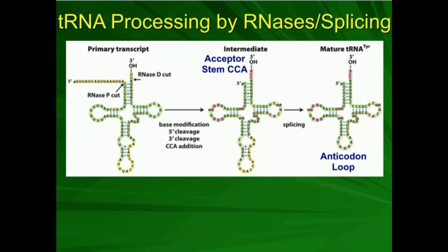We need to add onto that A a CCA sequence - three nucleotides. That's called the acceptor stem CCA, which is not present in the primary transcript. The way we can put that on is through an enzyme called tRNA nucleotidyl transferase, which is able to add C, C, and A. That CCA is important - particularly the A - because the 3' OH of that adenosine is what actually physically bonds to amino acids and brings them to the ribosome.